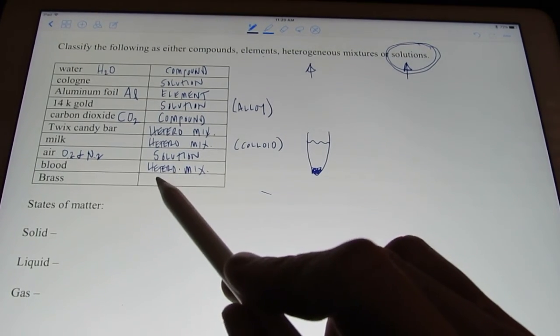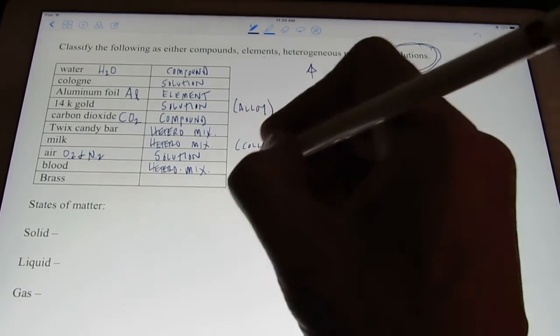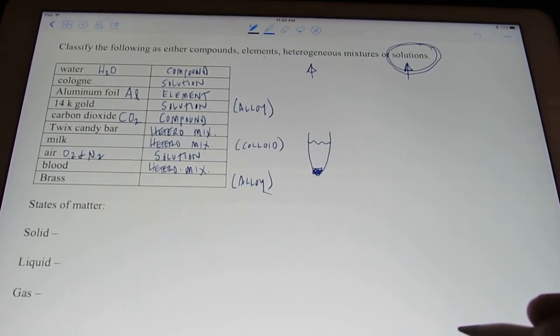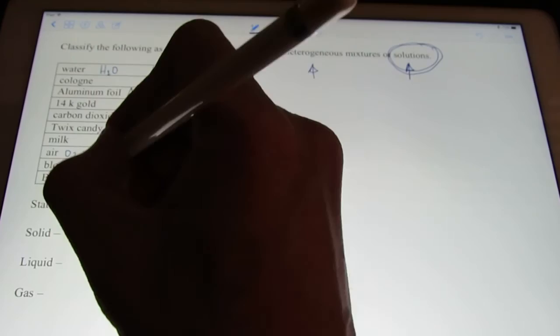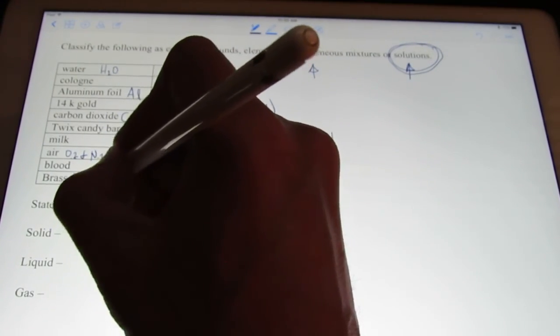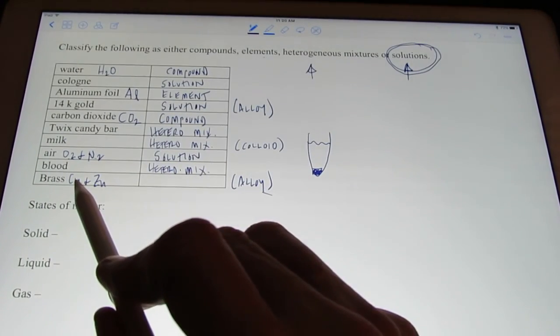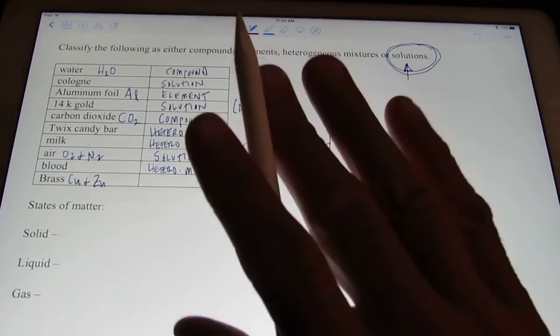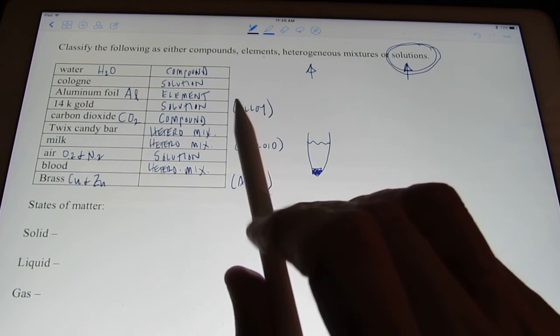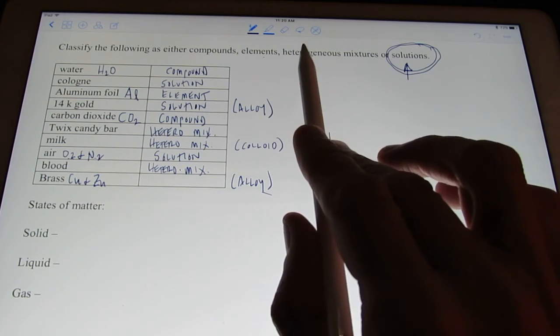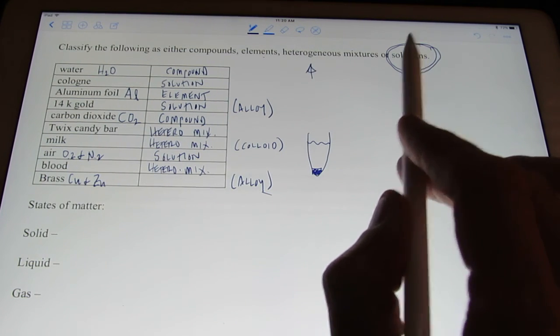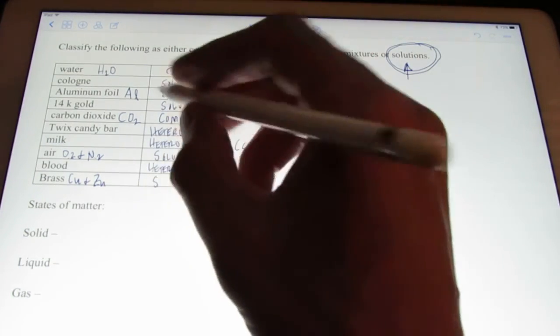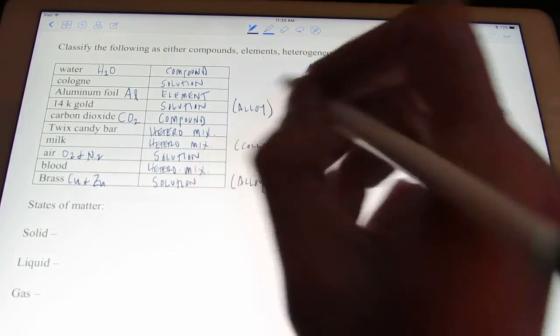All right. Now, last one in my example here would be brass. Brass is another alloy. We're going to demonstrate making brass in class. It's an alloy between copper and zinc. The chemical symbol for copper is Cu. And for zinc is Zn. We mix those two together. They're not chemically bonded together. Now, is it heterogeneous or is it homogeneous? Yeah, it's uniform throughout. So, I would call brass, just like I did 14 karat gold, a solution.